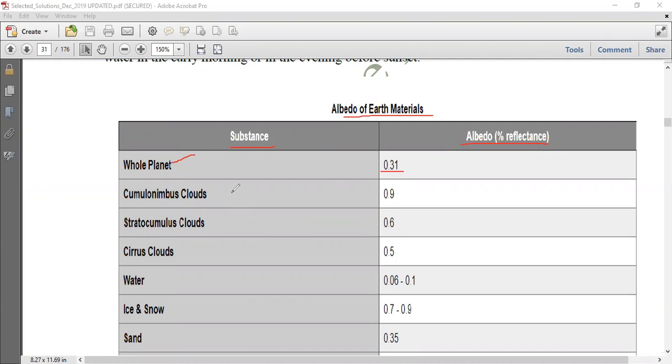Whole planet is around 0.31, cumulonimbus cloud 0.9 in albedo, stratocumulus cloud 0.6, serious cloud 0.5. And here comes water which you can see it is ranging from 0.06 to 0.1 so that's why maximum variation in the albedo is shown by water.